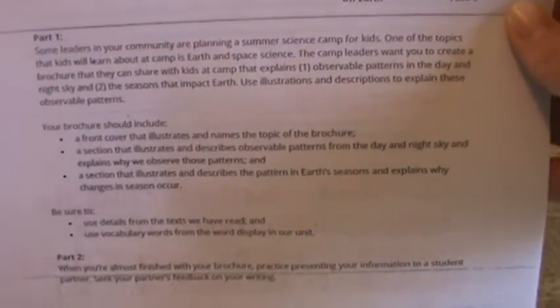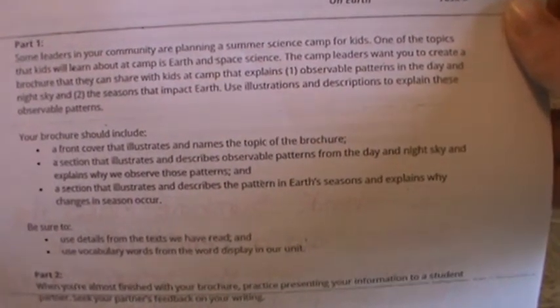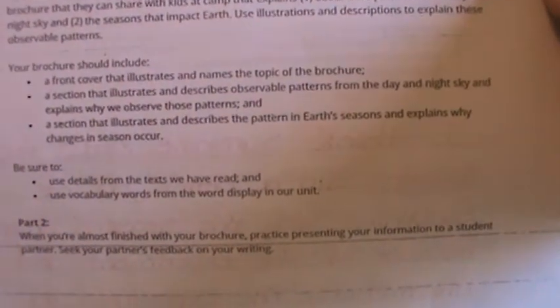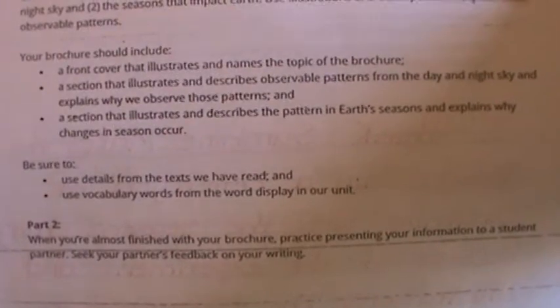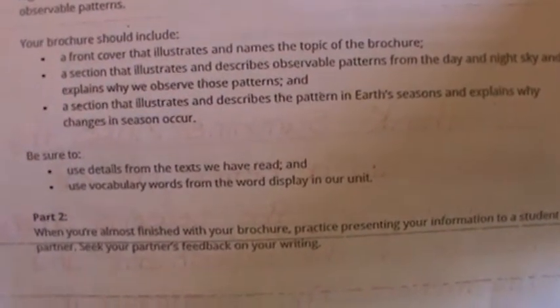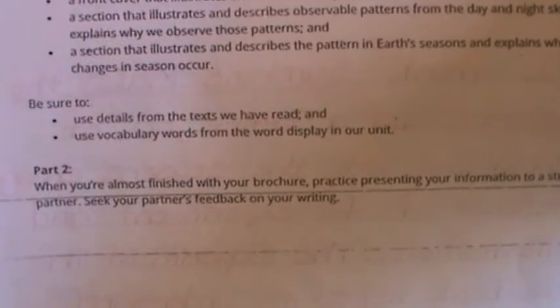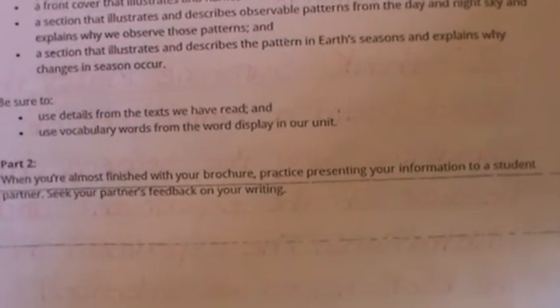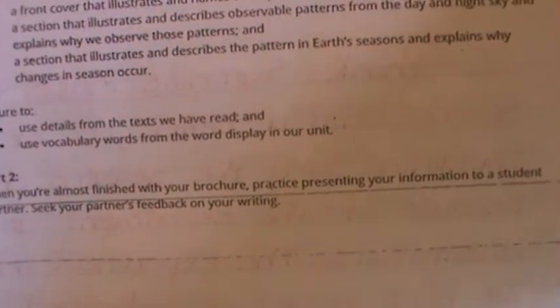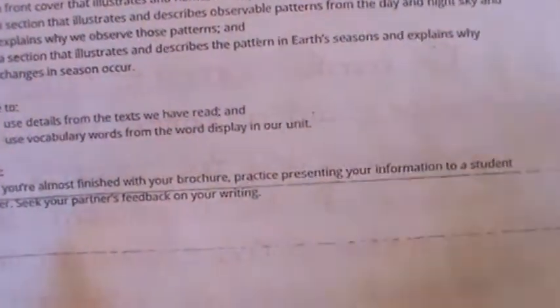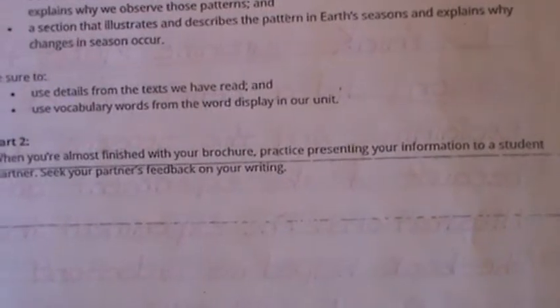Your brochure should include: a front cover that illustrates and names the topic; a section that illustrates and describes the patterns for day and night and explains why we observe those patterns; and a section that illustrates and describes the pattern of Earth's seasons and explains why changes in seasons occur. Be sure to use details from the text and vocabulary words from days 1 through 7. After they complete it, have them present it to you and give them feedback.